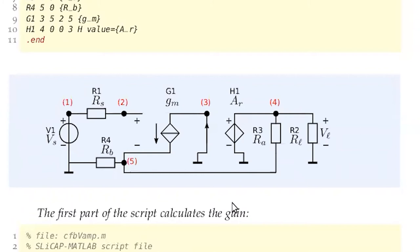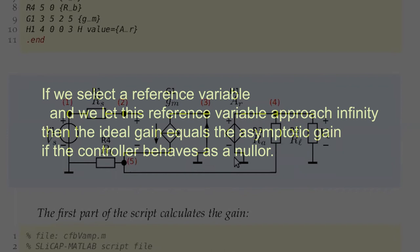We can select the voltage-controlled current source G1, or the current-controlled voltage source H1, as the loop gain reference. Before going through the calculations, let's do it by circuit inspection. We stated the following: if we select a reference variable and let it approach infinity, then the ideal gain equals the asymptotic gain if the controller behaves as a nullor.